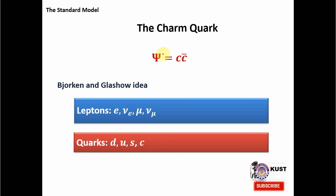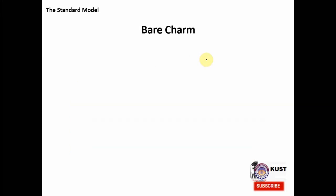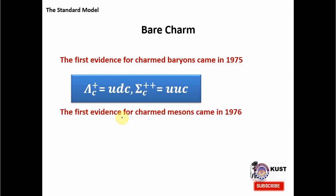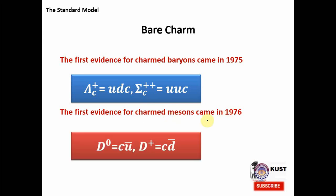Since the J/Psi meson is made of charm and anti-charm, the net charm on J/Psi is zero — we cannot see bare or naked charm here. So a search was started to discover the bare or naked charm. In 1975, the first evidence came from baryons when two baryons — lambda and sigma — were discovered with one charm quark involved, confirming the fourth quark. Evidence for a meson with bare charm came in 1976 when D0 and D plus were discovered with one charm quark, confirming the charm quark.